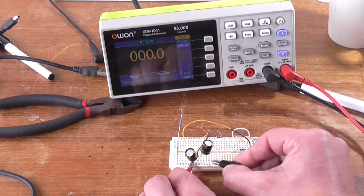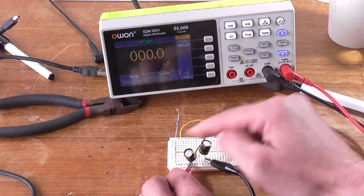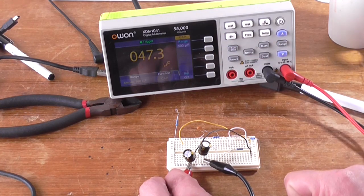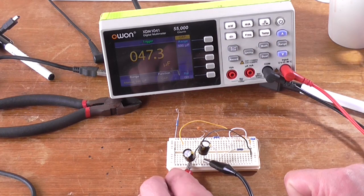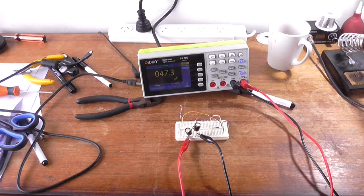So if we now move our negative probe to the negative end of the second capacitor, now these two are in series. Look at that. 47.3 microfarad. Almost half. And there was no visual trickery there or editing tricks. That was one continuous shot.